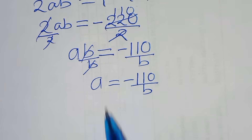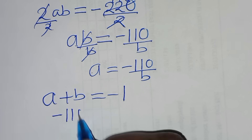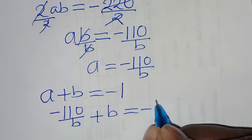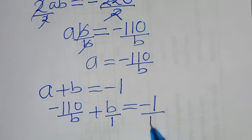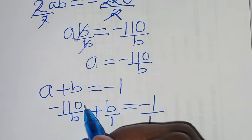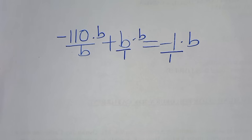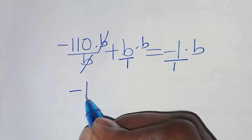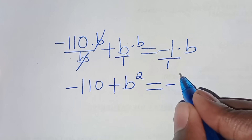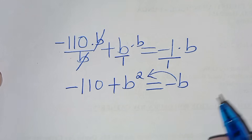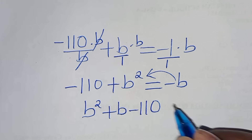The next step is to substitute a into equation 3. Equation 3 is a plus b equals minus 1, so substituting a equals minus 110 over b, we get minus 110 over b plus b equals minus 1. Multiplying both sides by b, we get minus 110 plus b squared equals minus b. Taking minus b to the left, b squared plus b minus 110 equals 0.